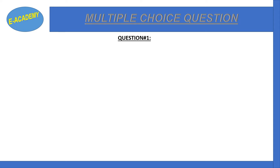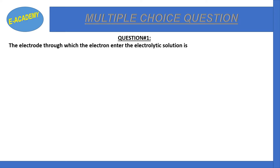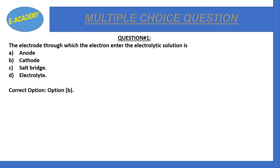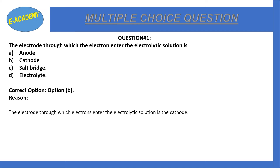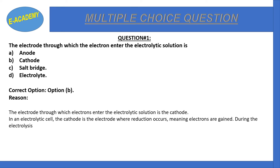Question number 1: The electrode through which electrons enter the electrolytic solution is — anode, cathode, salt bridge? The correct option is B: cathode. The cathode is the electrode where electrons enter the electrolytic solution. In an electrolytic cell, the cathode is the electrode where reduction occurs.